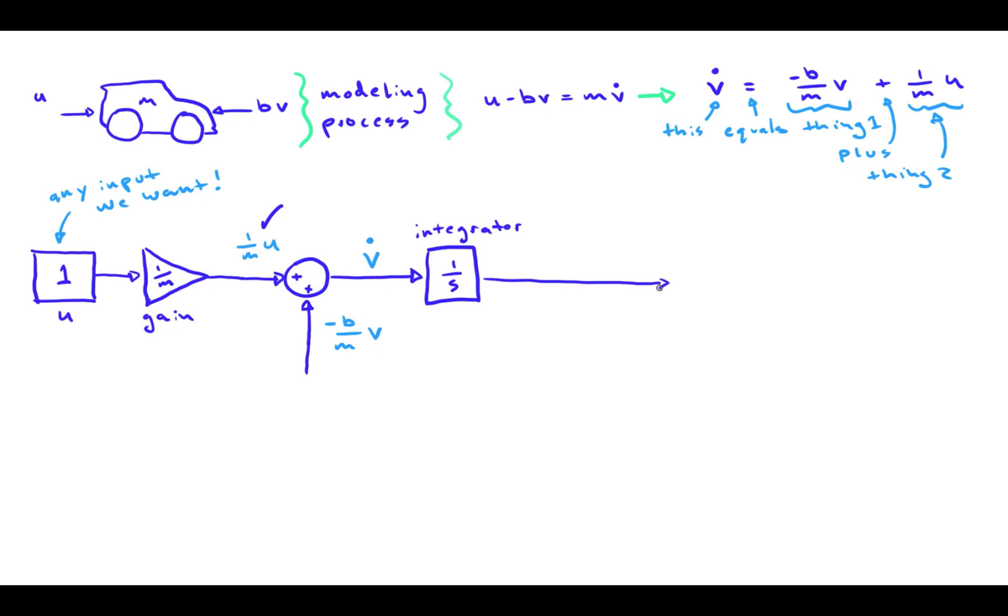Thus, the output of this integrator block is indeed the signal v, which represents the velocity of the vehicle. Since this is the output of the system, we also want to send this signal to the output via a sink block.